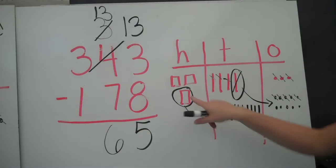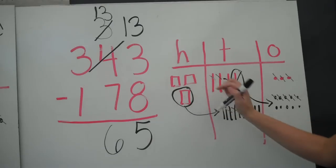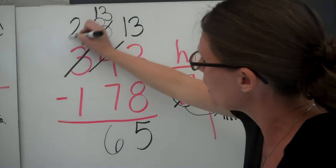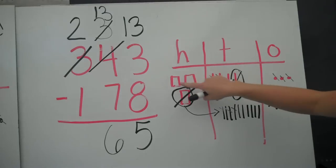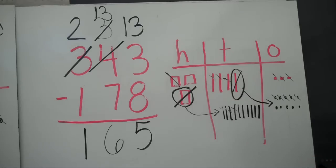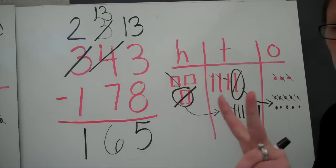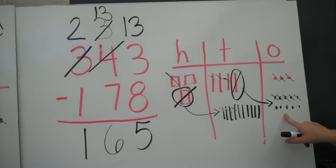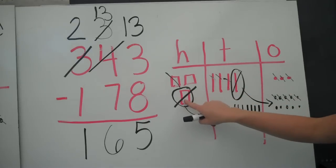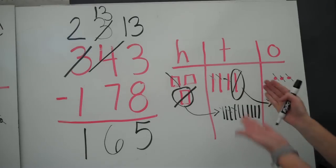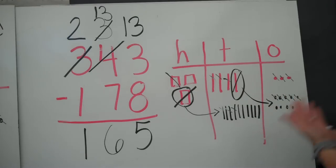Now do I have three hundreds left? No, because I got rid of that hundred. So I'm going to cross off my 3 and make it a 2. 2 minus 1 equals 1. My answer is 165. I had to regroup two times — I had to regroup a 10 into 10 ones, and I had to regroup a 100 into 10 tens. And that's all because I didn't have enough in my column.